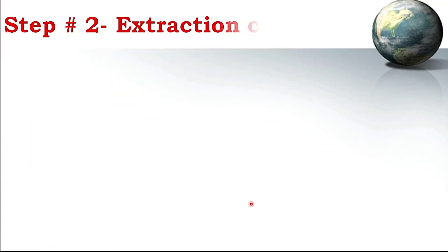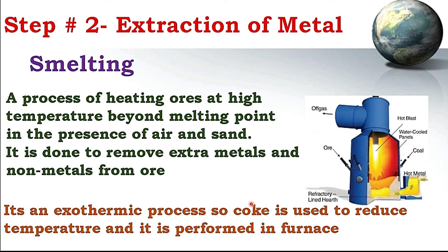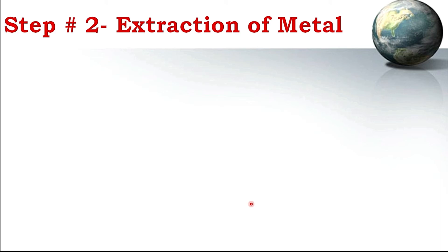Another method is known as smelting. Here, ore is mixed with sand and heated beyond its melting point to remove extra metals and non-metals from the ore. It is an exothermic process, so coke or carbon is used to reduce the temperature. This process is performed in a furnace, and after this process most extra metals can be removed.